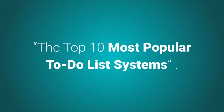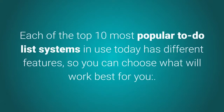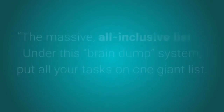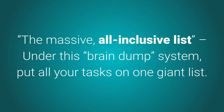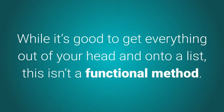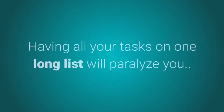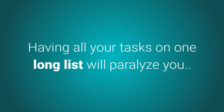The top 10 most popular to-do list systems: each has different features so you can choose what works best for you. The first system is the massive all-inclusive list — a brain dump where you put all your tasks on one giant list. While it's good to get everything out of your head and onto paper, this isn't a functional method, as having all your tasks on one long list will paralyze you.